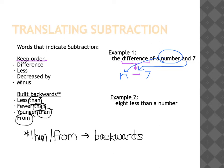Let's look at example two: 'eight less than a number.' The key phrase here is 'less than.' Less than indicates subtraction, but the 'than' in there indicates we are going to reverse the order from the English to the math expression. Eight was written first, so it goes behind the subtraction symbol. A number is written second, so it goes in front of the subtraction symbol. You can use whatever variable you want unless indicated otherwise. So 'eight less than a number' is translated as x − 8.